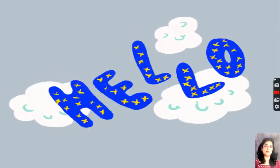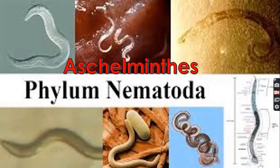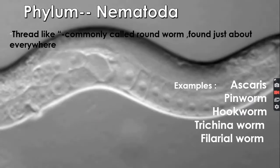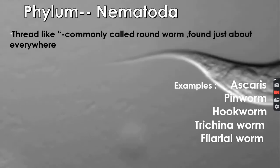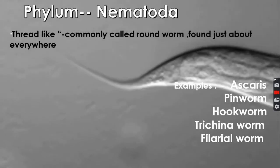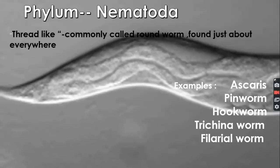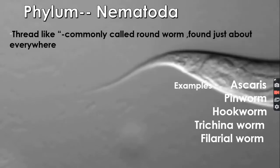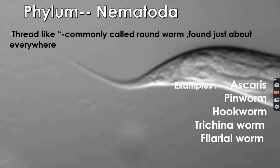Hello students, hope you all are doing good. Today I am back with a new phylum — Phylum Nematoda, also called Phylum Aschelminthes, commonly called roundworm, found just about everywhere. Its characteristic is that it looks thread-like or wire-like, and its common name is roundworm. Examples include Ascaris, pinworm, hookworm, Trichinella worm, and filarial worm.